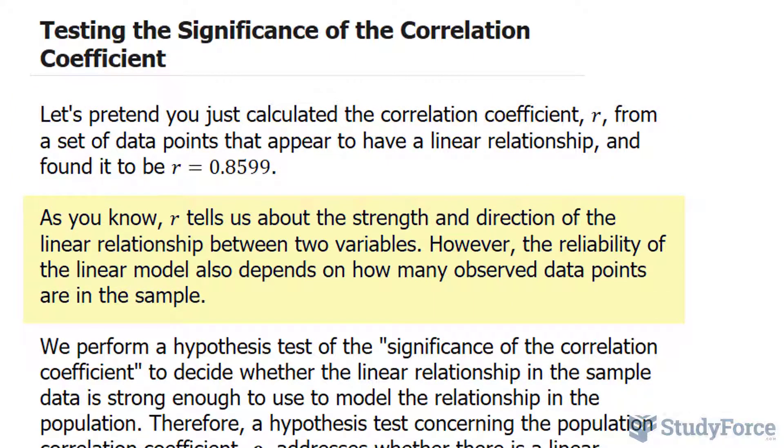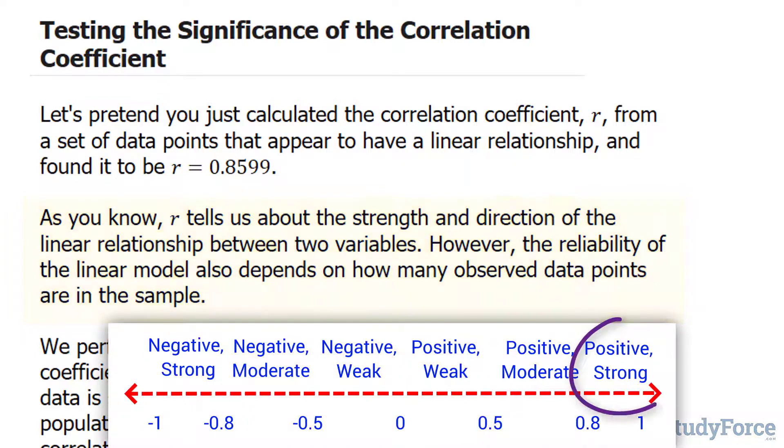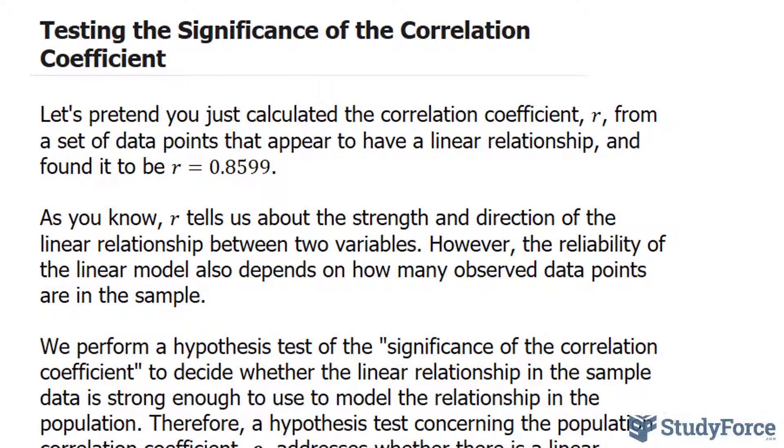As you know, R tells us about the strength and direction of the linear relationship between two variables, and a value of 0.859 tells us that it is positive, strong, and going from bottom left to top right. However, the reliability of the linear model also depends on how many observed data points are in the sample.